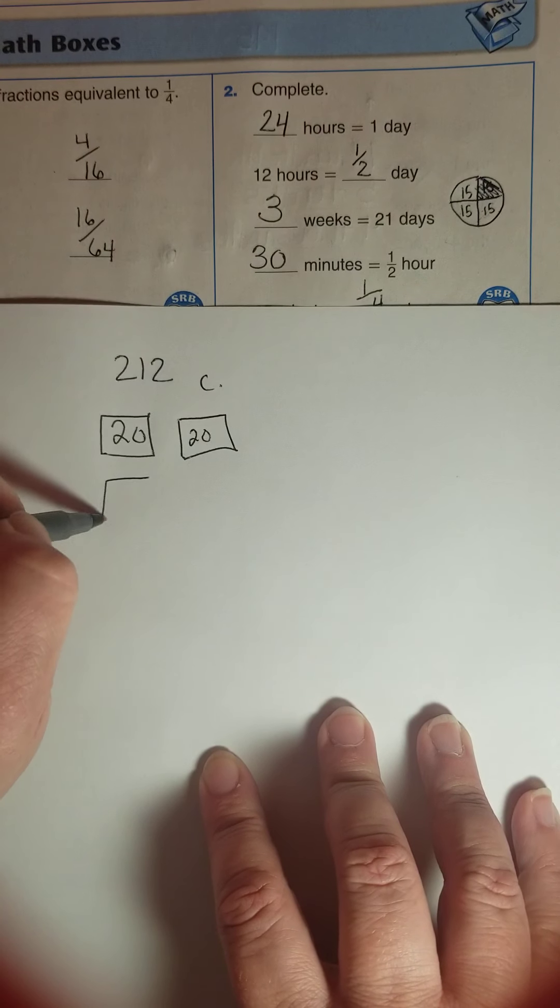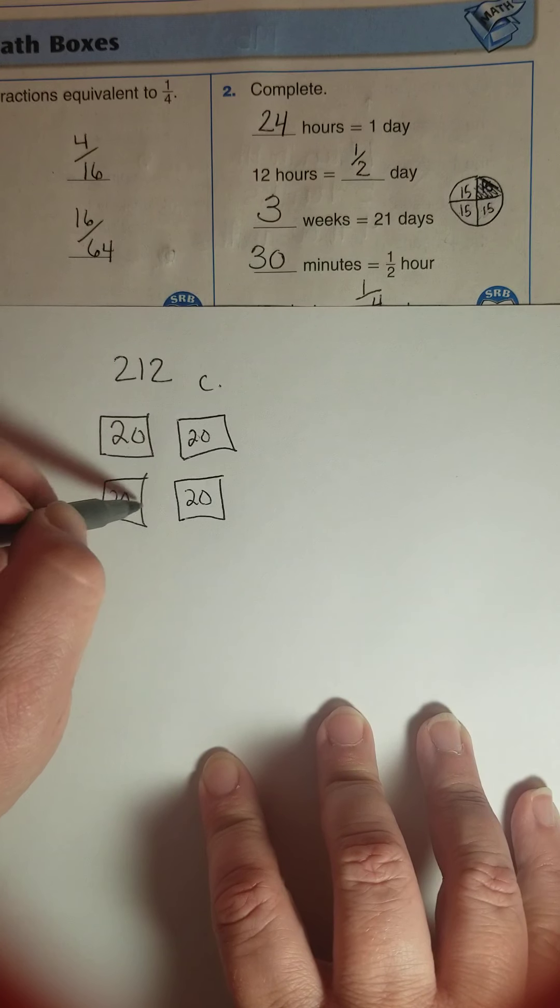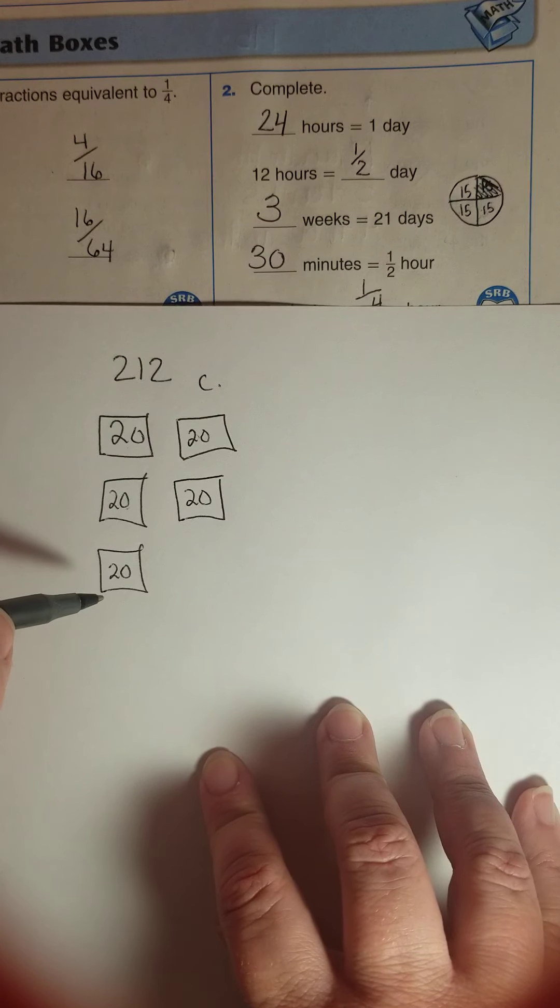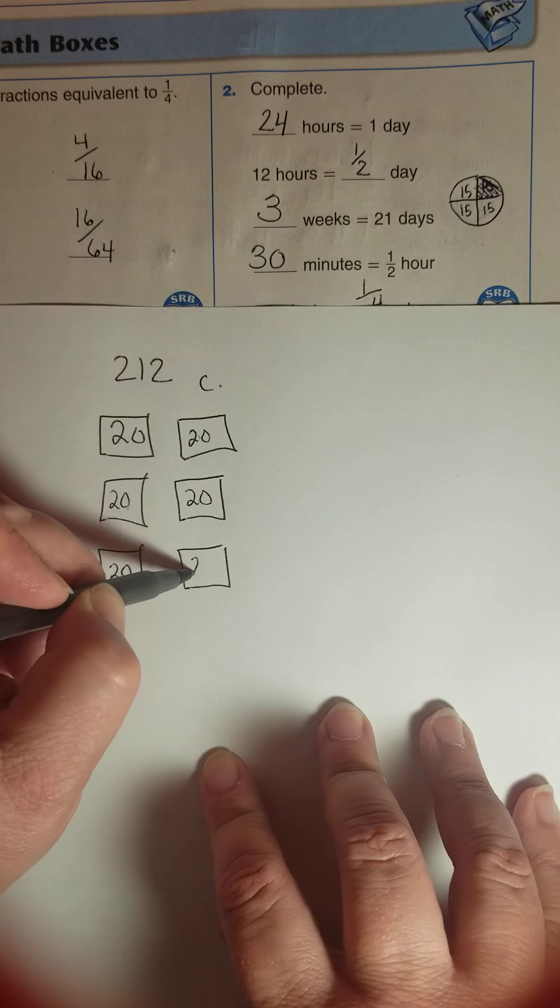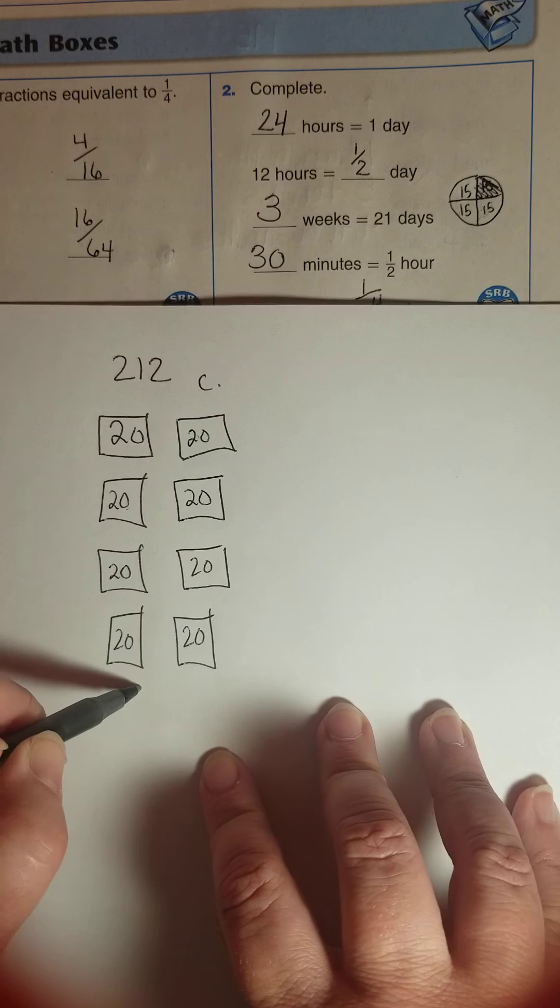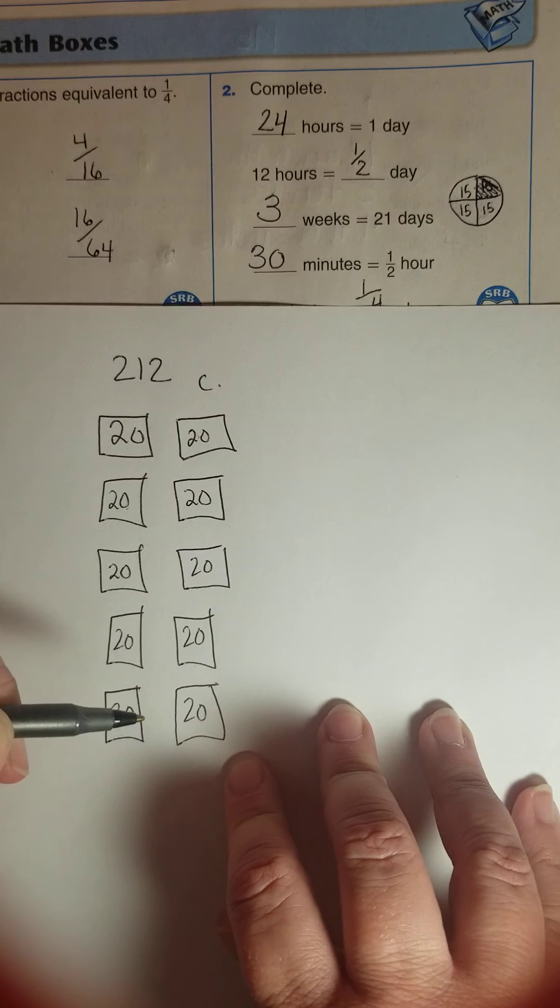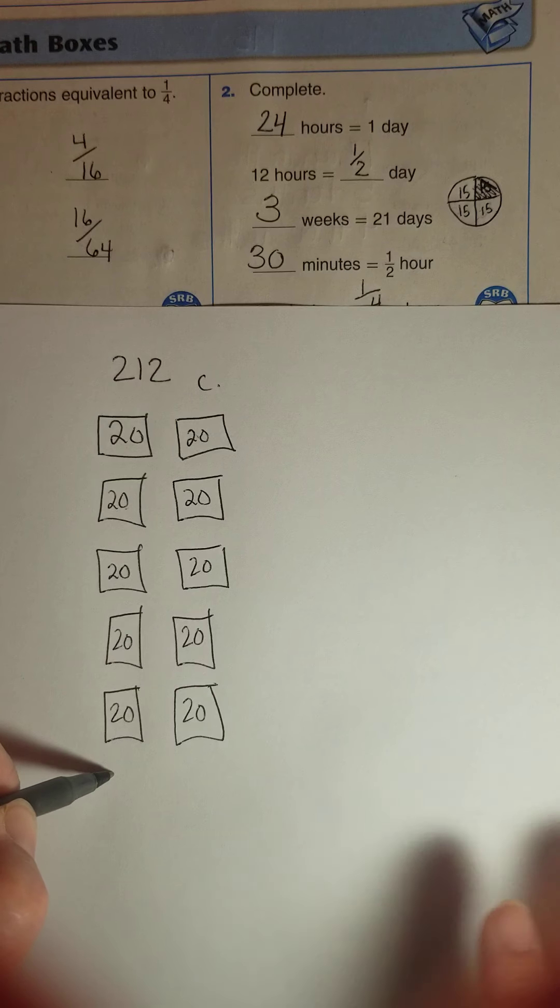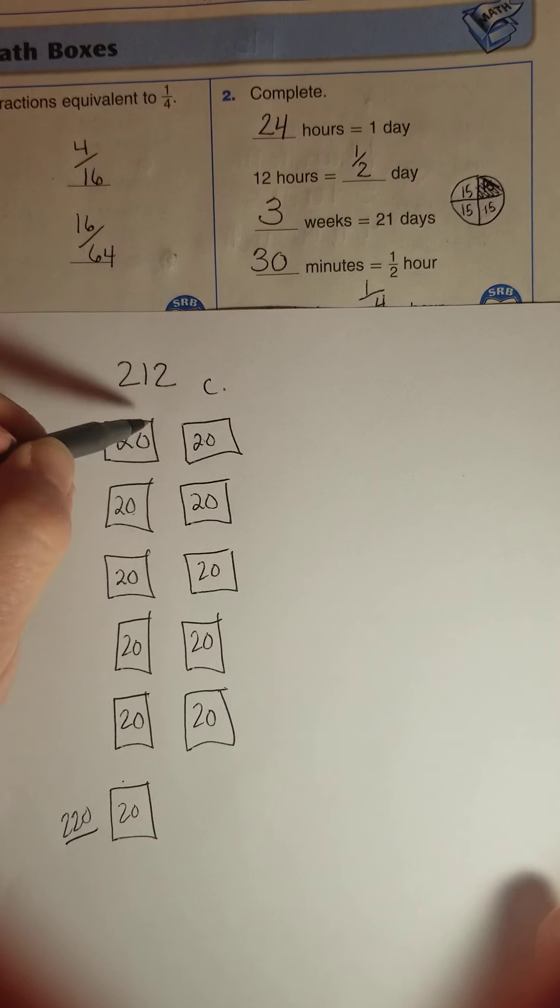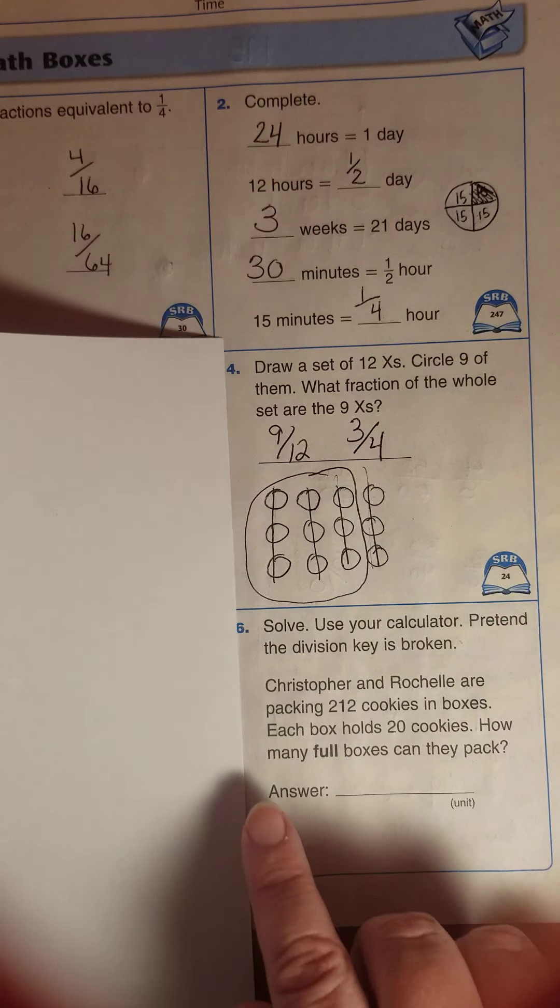If I had two boxes, I would have forty, sixty, eighty. I'm counting by twenty's. A hundred, a hundred twenty, one hundred forty, one hundred sixty, one hundred eighty, two hundred. If I do another box, that would be two hundred twenty, and I only have two hundred twelve cookies.